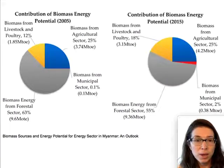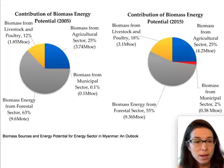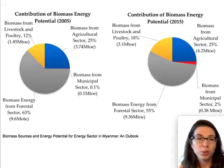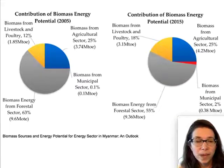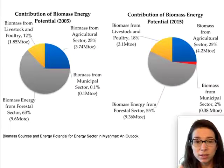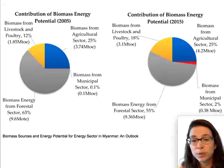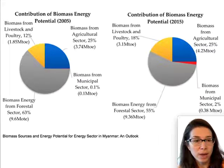Looking at one country's data — Myanmar, or Burma — we see biomass energy potential broken down by sector: the forestry sector accounts for 63%, then livestock and poultry, agriculture, and others. By 2015, a new biomass source appeared: the municipal sector, shown as a small red sliver. This illustrates how the dynamics of where we get biomass from are changing.